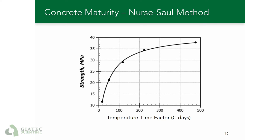If you plot the temperature time factor values determined at different times along with the corresponding strength values, you get a maturity-strength correlation that follows a logarithmic relationship. This is the simplest maturity method and has some limitations. For example, it assumes that the rate of concrete strength development has a linear relationship with temperature, which is not always valid. Some researchers have developed other variations of the Nurse-Saul equation to account for its limitations.